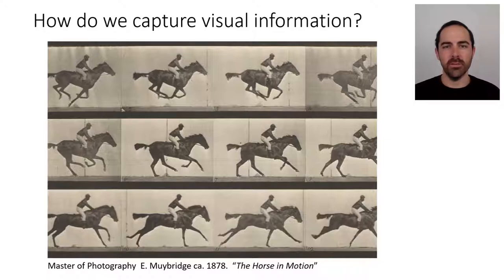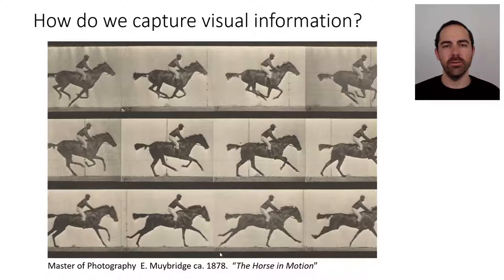It turns out that we are capturing visual information in the same way that Muybridge invented it 140 years ago. Muybridge was a photographer, and back then there was a debate in California about whether when a horse was riding it had all four legs off the ground. This was a task for Muybridge and it took him six years to come up with actual evidence, showing that yes, when a horse was galloping the four legs were at some point off the ground.